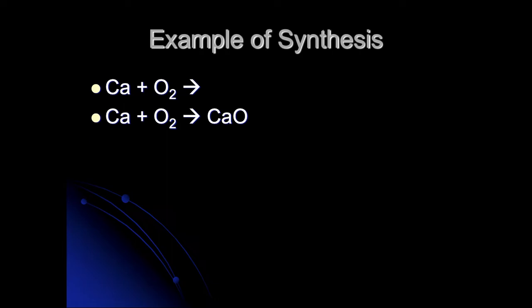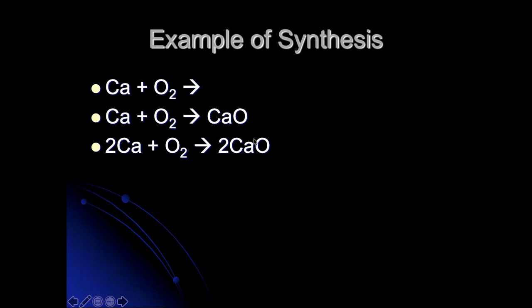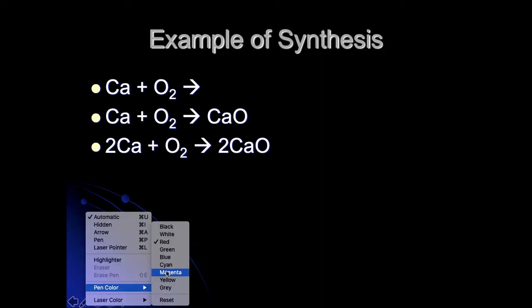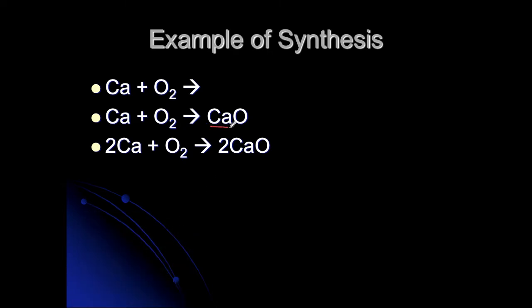Once they form CaO, you need to determine if it is balanced. This equation isn't balanced, so we're going to balance it by putting a two in front of the calcium and a two in front of the calcium oxide on the product side. Notice here you only have one compound on the product side — it is not about whether there's a coefficient in front of it. You do not have a plus sign on your product side of the reaction.